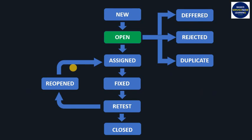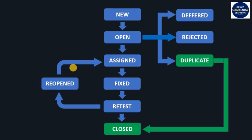In the bug lifecycle, if the bug is in Open state and the development team lead finds that bug already exists in the system, they change the state to Duplicate and close the particular bug.